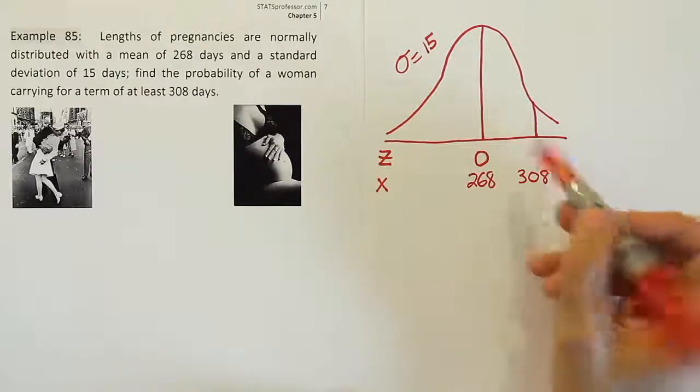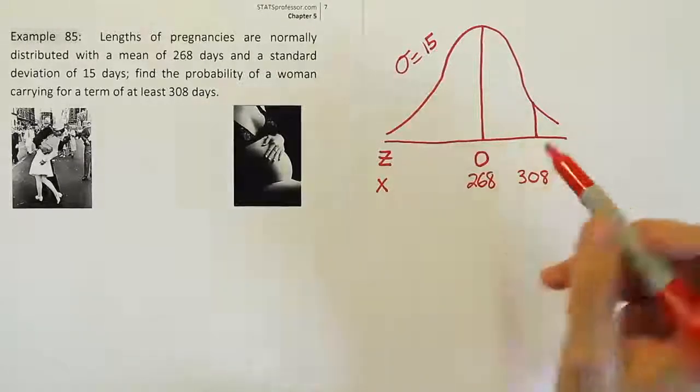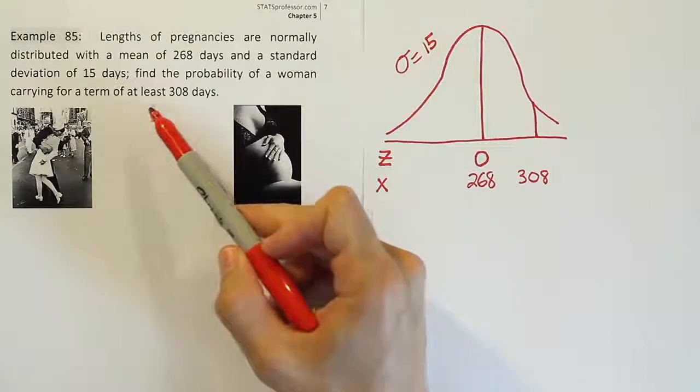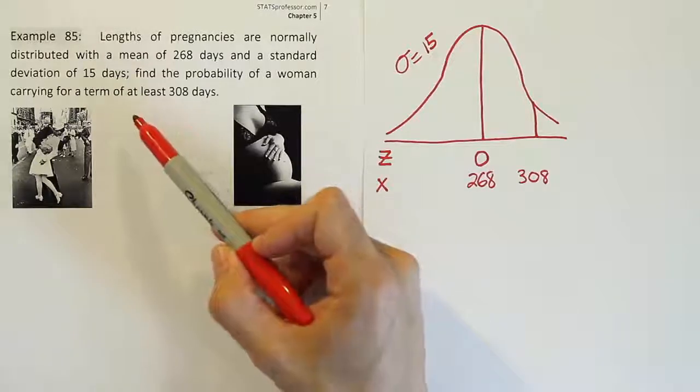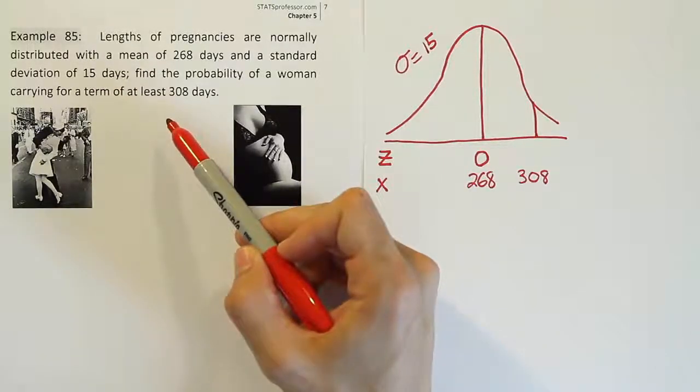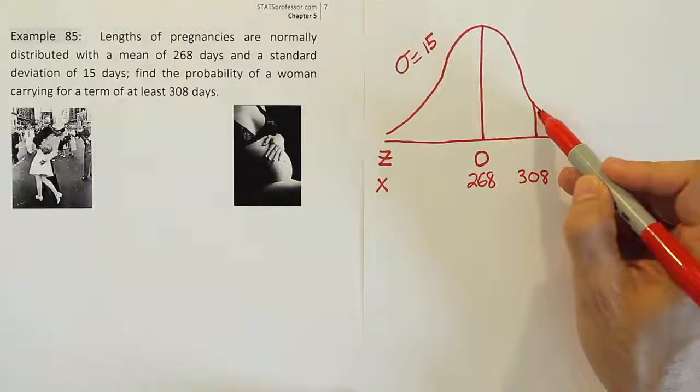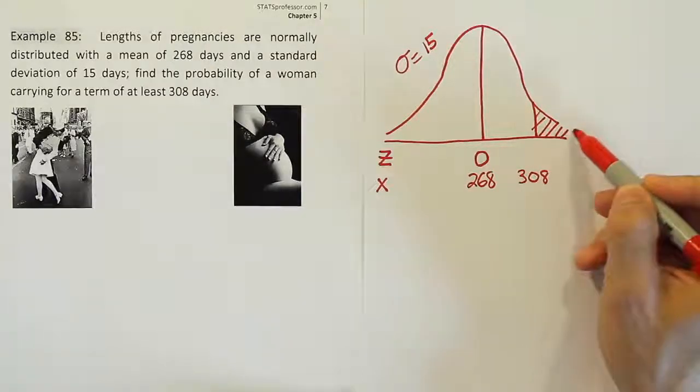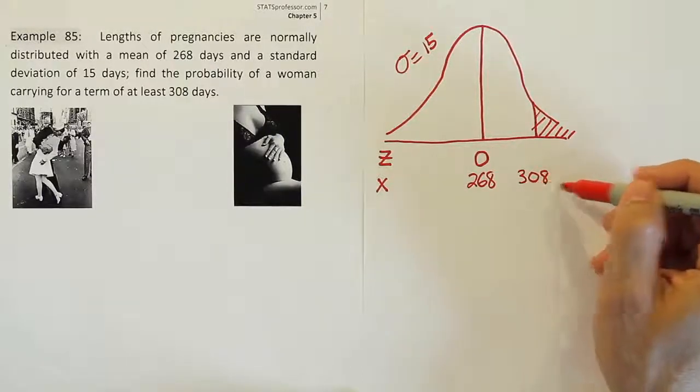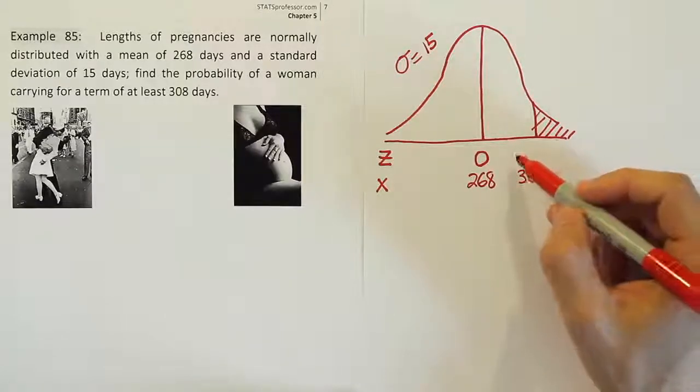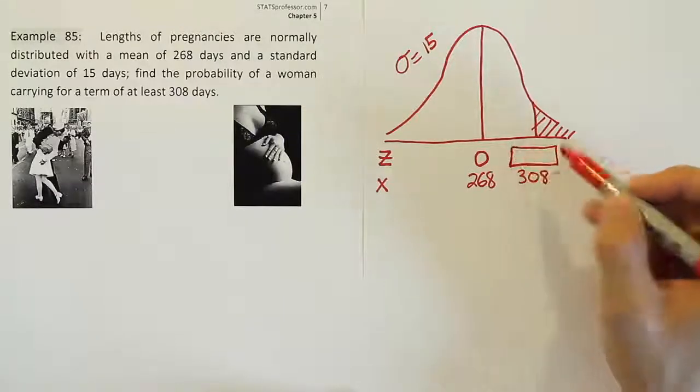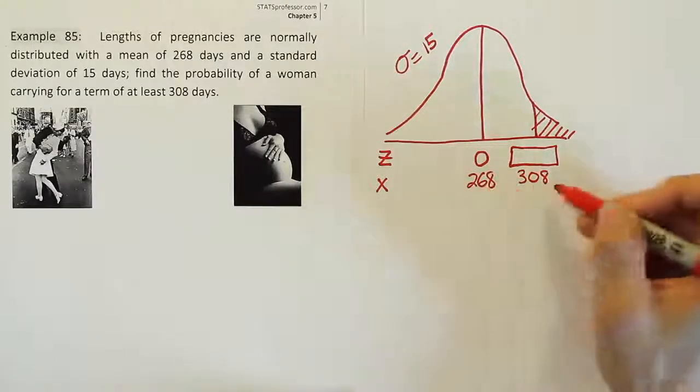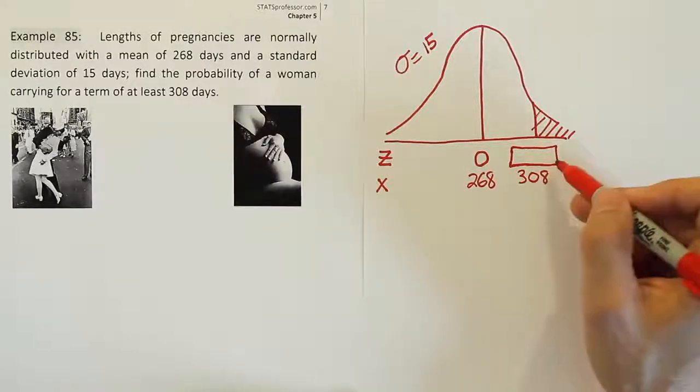Now what we want to do is figure out what area on this drawing we're looking for. It says the probability that the woman would carry for a term of at least 308 days. At least. If I said you need at least a C in this class to pass, that means you need a C or higher, right? So saying at least 308 days means 308 days or higher. So I'm going to shade to the right because that represents 308 days or more. Then from there we would need to convert this into a z-score in order to look that up on the z-chart. We can't look up 308 because it's not a z-score value. It's a pregnancy length. So to do that we're going to convert it into a z-score.